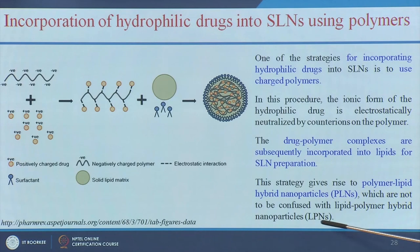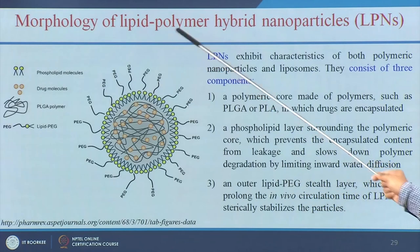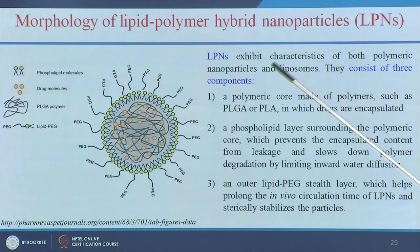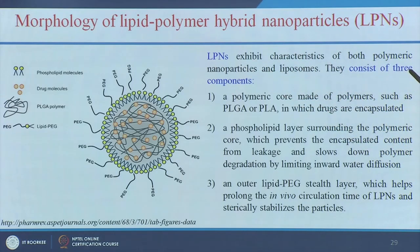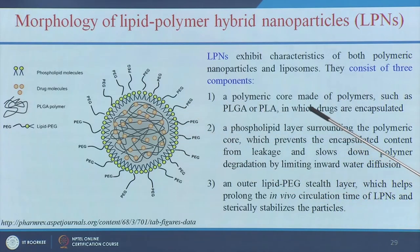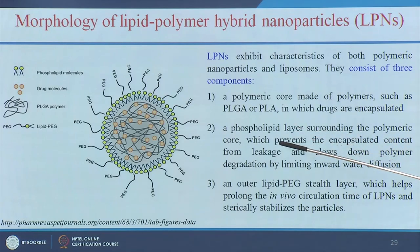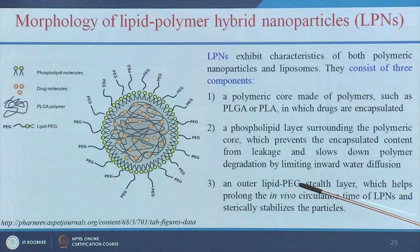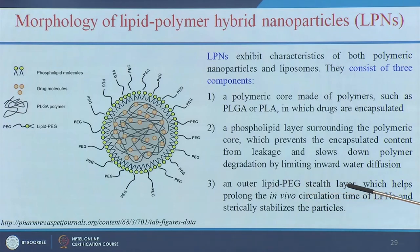Lipid-polymer hybrid nanoparticles (LPN) exhibit characteristics of both polymeric nanoparticles and liposomes, consisting of three components: a polymeric core of PLG or PLA where the drug is encapsulated; a phospholipid layer surrounding the core to prevent drug leakage; and an outer lipid-PEG stealth layer. The PEG outer layer allows the nanoparticle to escape from the reticuloendothelial system and increases in vivo circulation time.